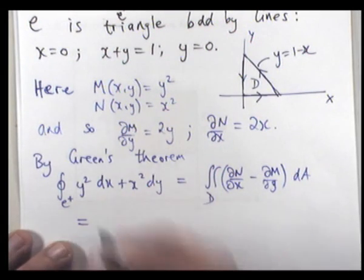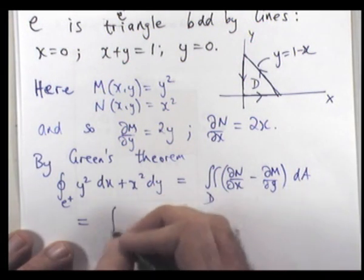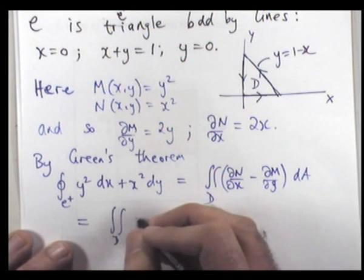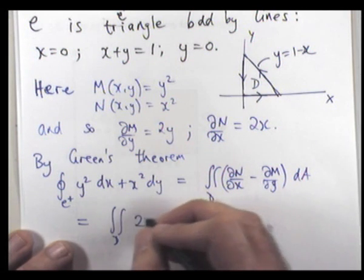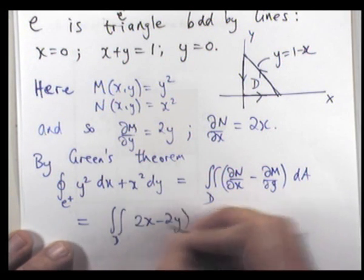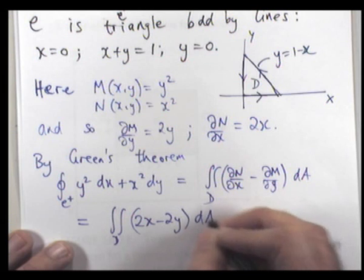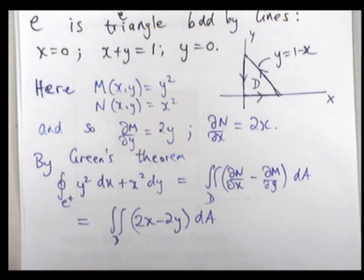Okay, so if we substitute in here and here, we'll get 2x minus 2y dA. So now we've reduced the analysis of our problem down to a double integral. It's not difficult to integrate.